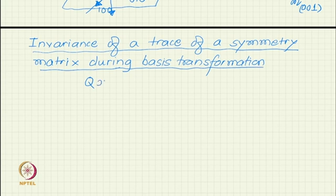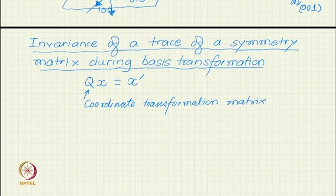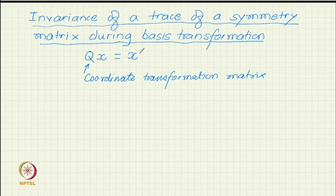Matrix during basis transformation or coordinate transformation - we saw that if there is a vector x, then the new coordinates will be given by Qx = x', where Q is the coordinate transformation matrix. We also saw that if there is a symmetry operation W, then that will transform into the new coordinate system by a different matrix. The relation is not as simple as QW, but the relation is QWQ^(-1). This we have established in one of the previous classes.